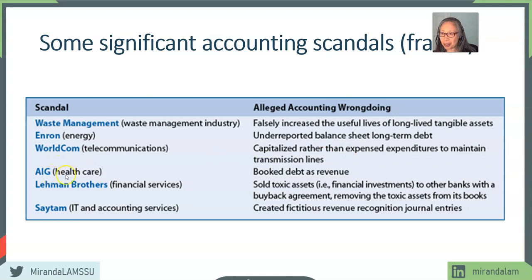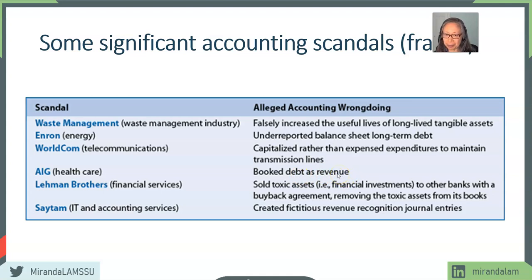AIG booked debt as revenue. That's really problematic because it underreports liability and overstates revenue. So it affects both the balance sheet in terms of solvency and also overstates earnings by overstating revenue.